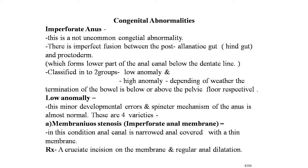The first low anomaly is membranous stenosis, also called the imperforate anal membrane. In this condition the anal canal is narrowed and covered with a thin membrane. On examination, the membrane will be seen bulging out with retained meconium. Treatment is a cruciate incision on the membrane followed by regular anal dilatations.